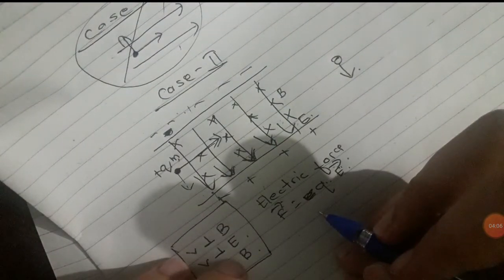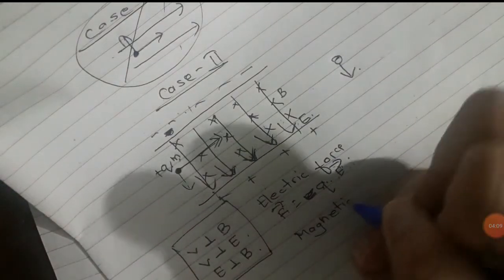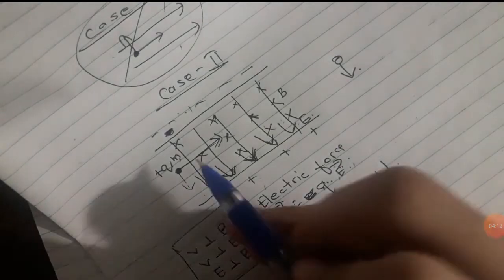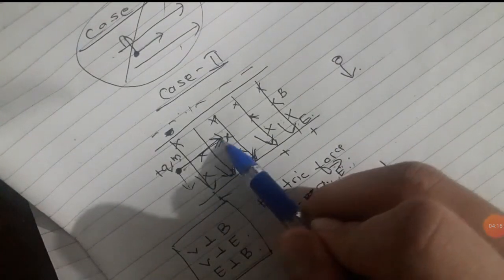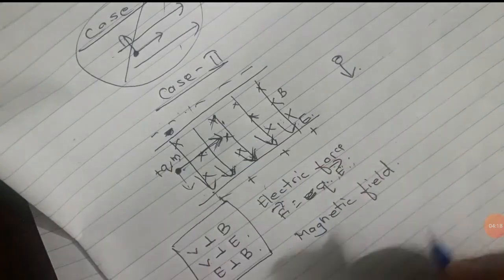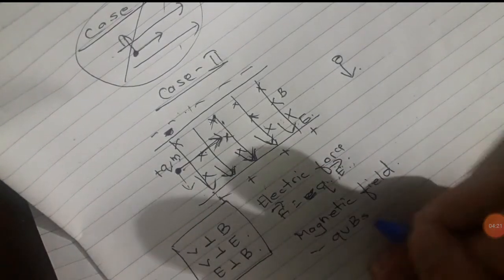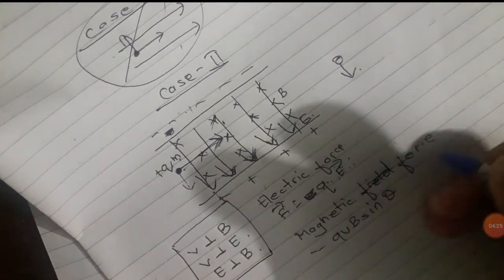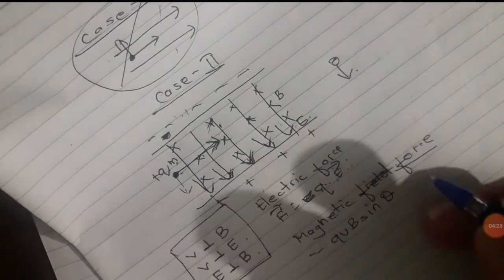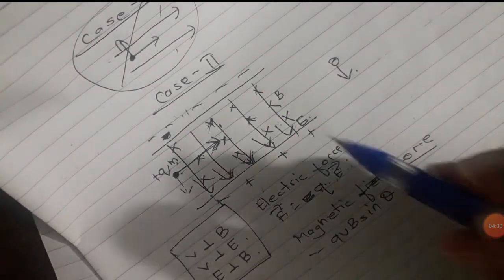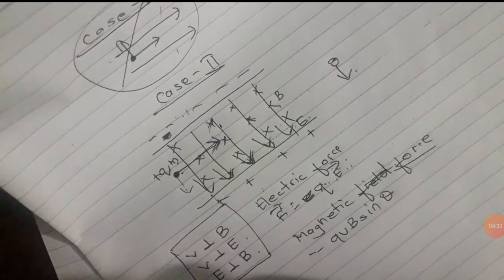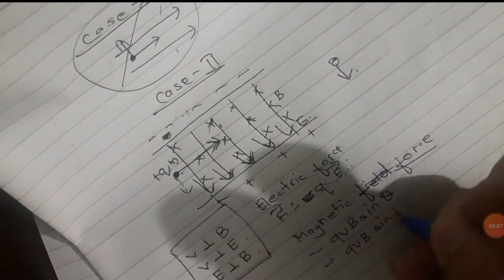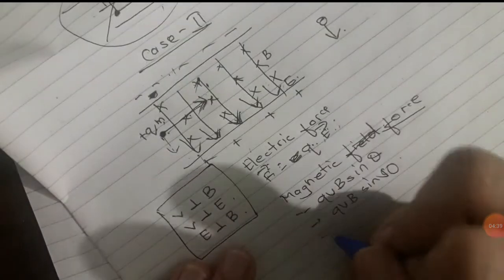Similarly, we have the magnetic force. The magnetic force is QVB sin θ. Since the point charge is perpendicular to the magnetic field, θ is 90 degrees, and sin 90 is 1. So the magnetic force simplifies to QVB.